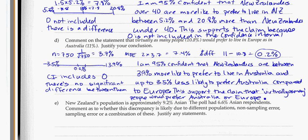By instinct, 11 and 10.8 are really close to each other, and my confidence intervals confirm they're actually pretty similar. I can't tell which is more preferred — it could be up to 3.9% more for Australia or up to 3.5% more for Europe. So it's uncertain. This was a dependent comparison, because if somebody changed their mind from Australia to Europe it changes both numbers. That's why I use 1 over the square root of n times 2 to get the margin of error for the difference. The difference includes 0, so there is no significant difference — it supports the claim that it's virtually the same.